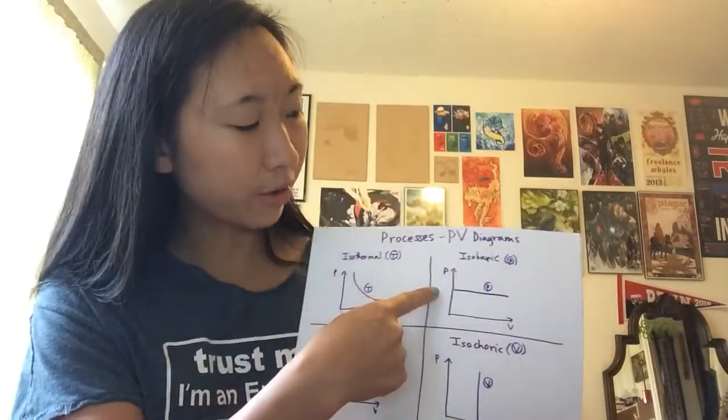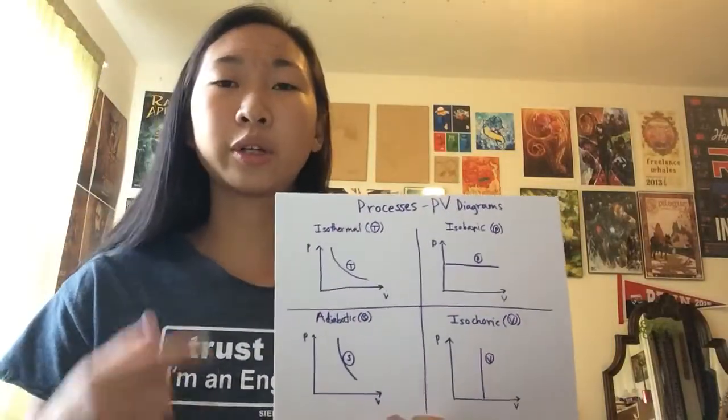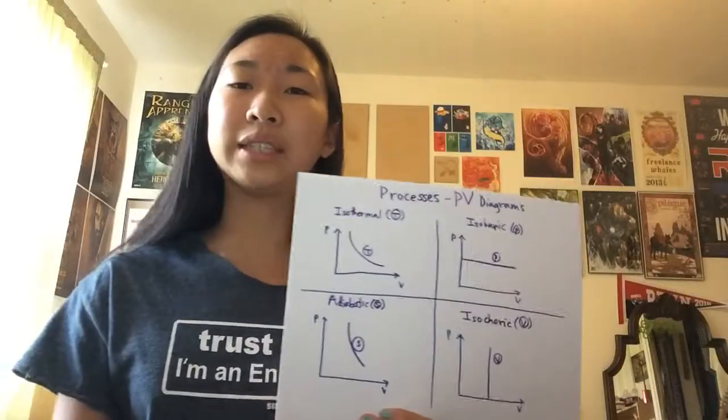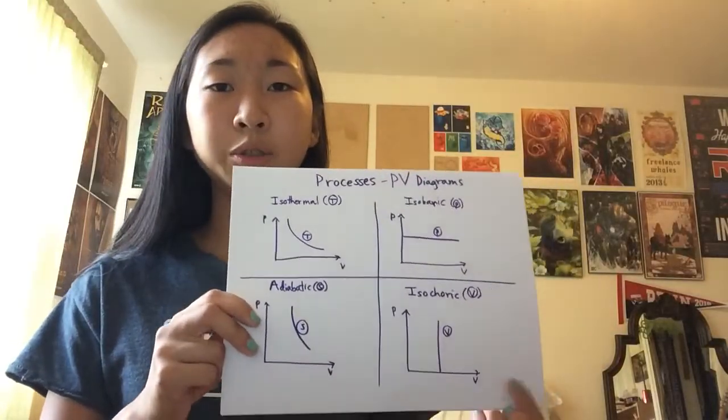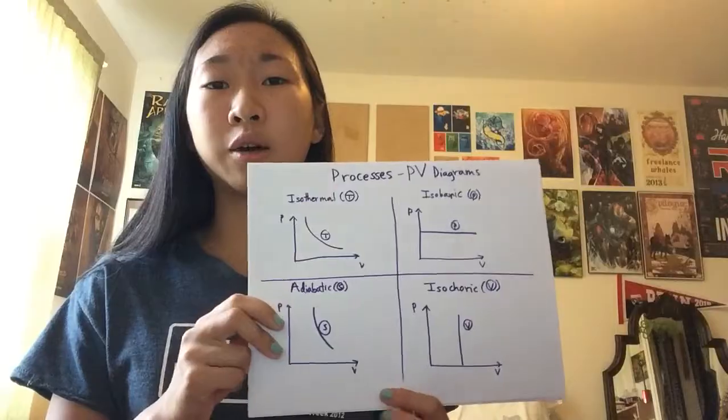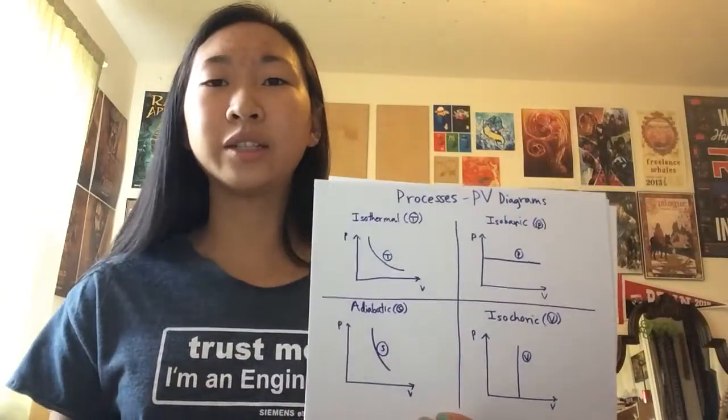Over here, you have the isobaric line, which is constant pressure, or a constant horizontal line on the PV diagram. Below, you'll have the isochoric, or constant volume line, which is vertical.